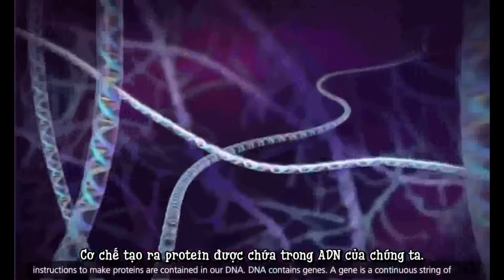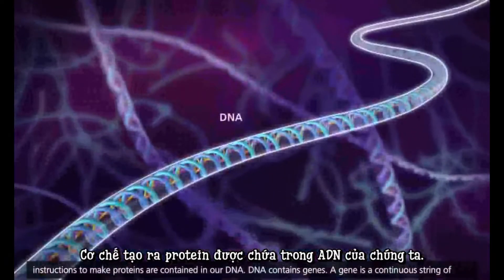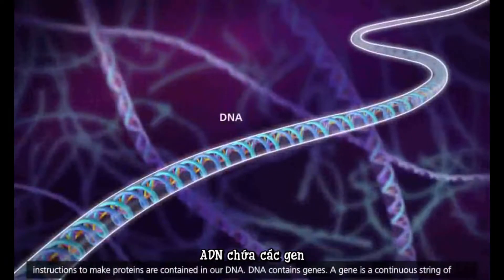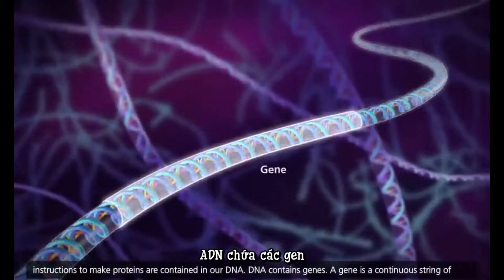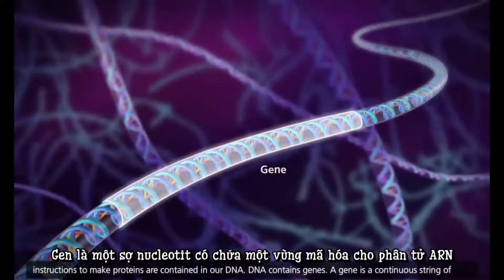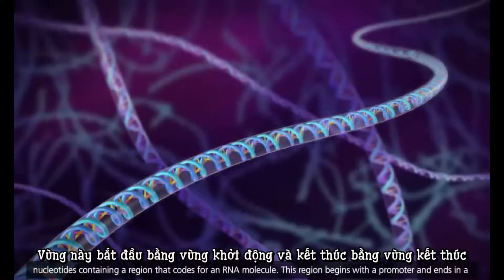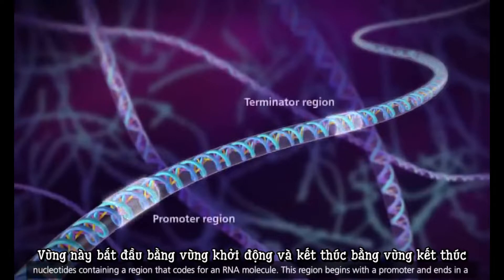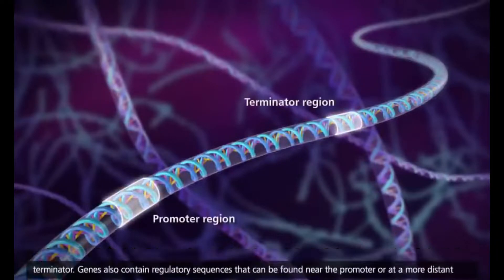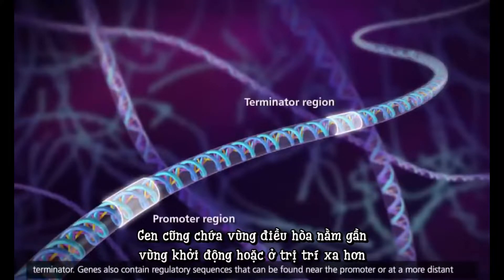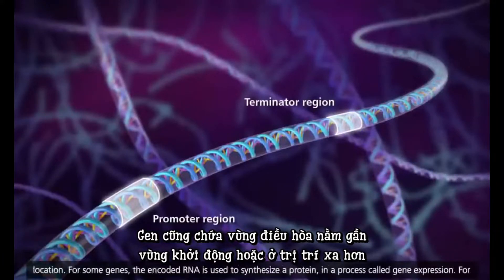And where are the instructions to manufacture these and all the different types of proteins we need to stay alive? The instructions to make proteins are contained in our DNA. DNA contains genes. A gene is a continuous string of nucleotides containing a region that codes for an RNA molecule. This region begins with a promoter and ends in a terminator. Genes also contain regulatory sequences that can be found near the promoter or at a more distant location.